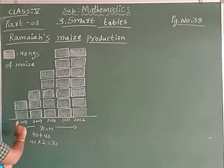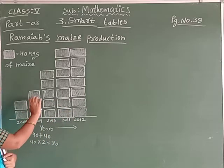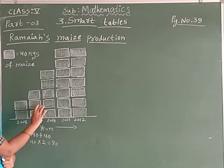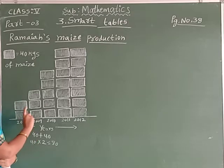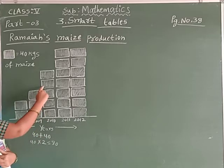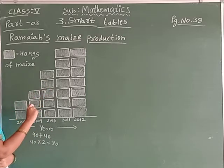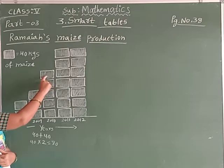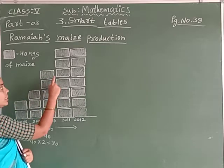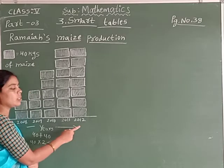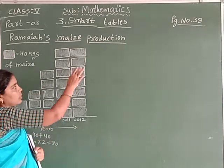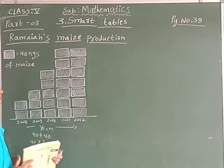In 2011 and 2012 — same, equal. In 2011: count 1, 2, 3, 4, 5, 6, 7 — so 7 boxes. 4 sevens are 28, so 280 kg. In 2011, not increasing — the maize same, equal production only. From 2008 to 2010, increasing. 2009 to 2010 is 80 kg increasing. 2010 to 2011 also 80 kg increasing. But in 2012, not increasing — equal.